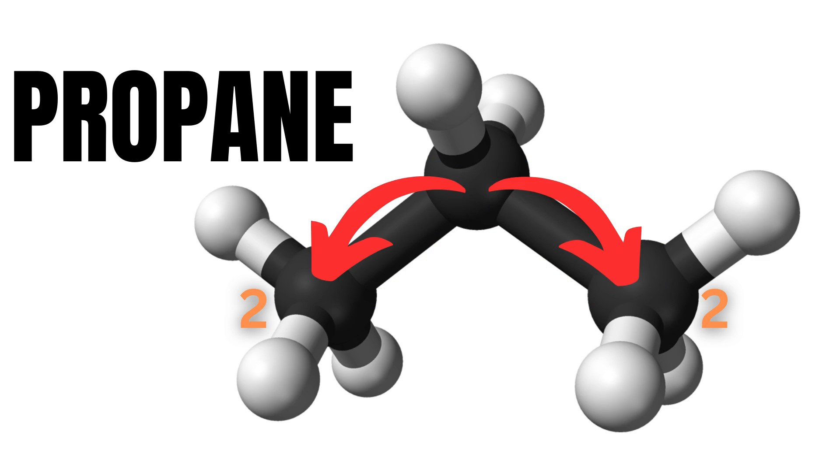The carbon in the middle is attached to two primary carbons, meaning that they are attached to only one carbon. This makes the score of the middle carbon one plus one, which is also two.